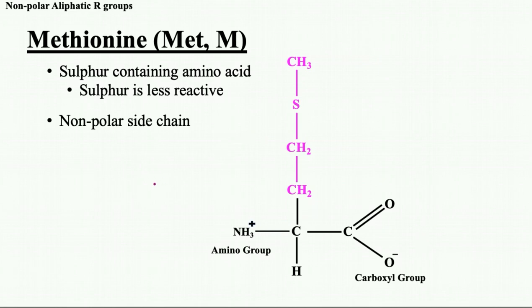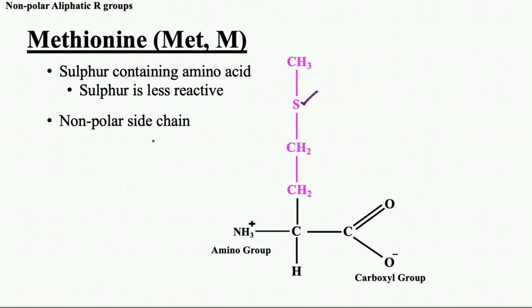Among all 20 amino acids, there are two that contain sulfur. Methionine is one of them and belongs to the non-polar aliphatic R group class. Although it has sulfur, in methionine the sulfur is less reactive compared to the sulfur-thiol group found in the other sulfur-containing amino acid. Therefore, the side chain of methionine is quite non-polar.